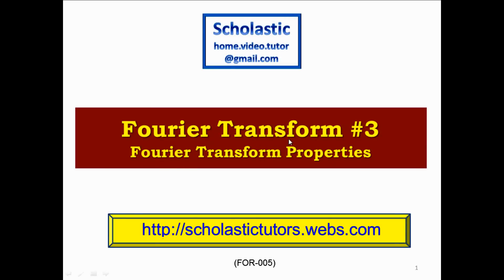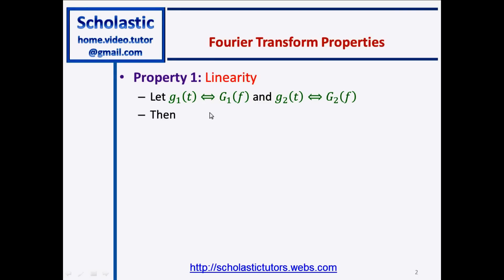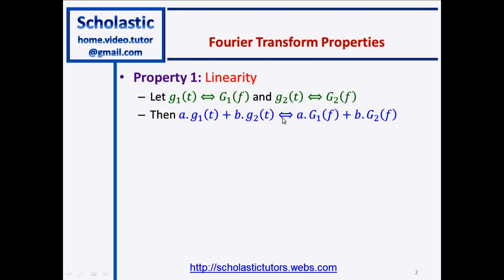Welcome back. In this lesson we are going to look at Fourier transform properties. Property number one: linearity. If you are given two functions g1(t) and g2(t) in the time domain and their respective frequency domain functions G1(f) and G2(f), then we can write a·g1(t) + b·g2(t) in the frequency domain equal to a·G1(f) + b·G2(f). Basically, the time domain functions multiplied by a coefficient can be added linearly.